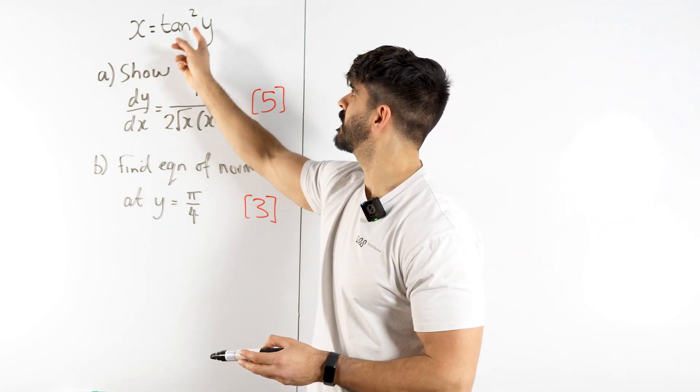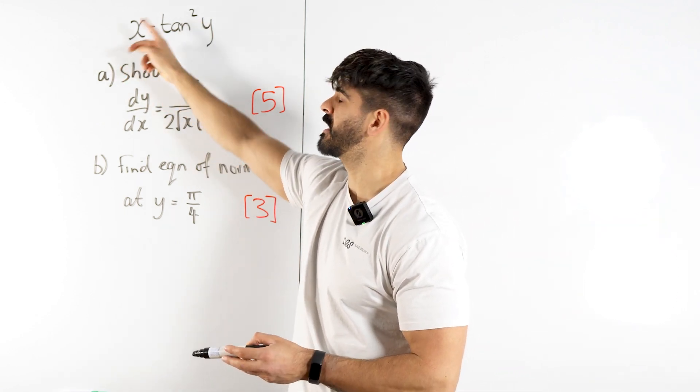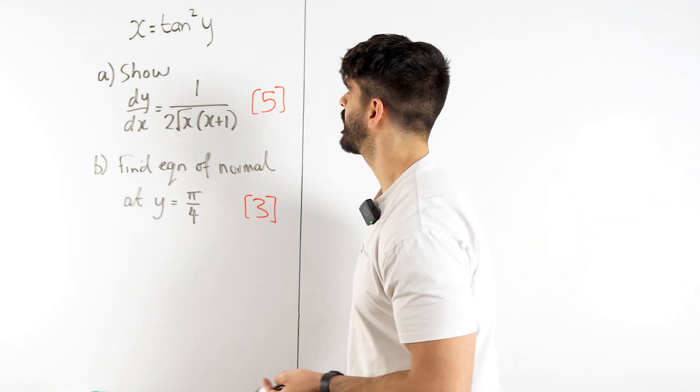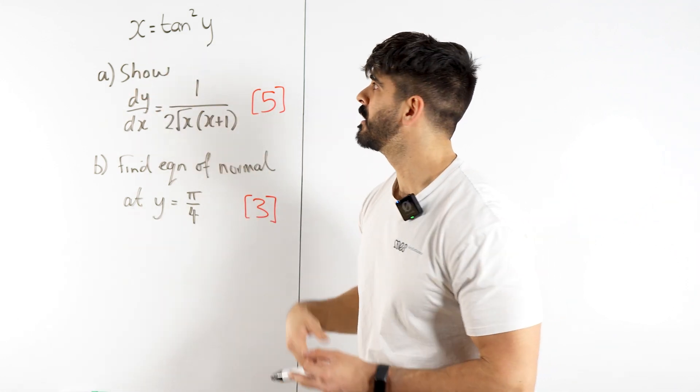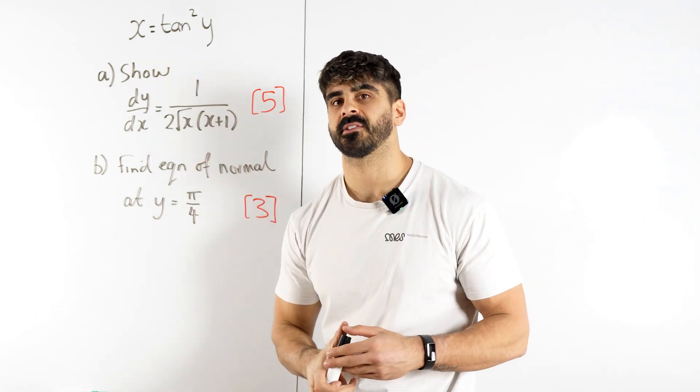Whereas in further maths most likely they would root both sides, say root x and then say arc tan. So further maths they might say y equals arc tan root x, differentiate that, but in normal maths they might have it rearranged for x.